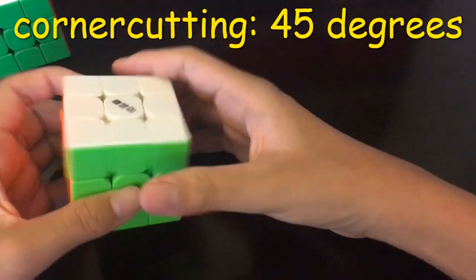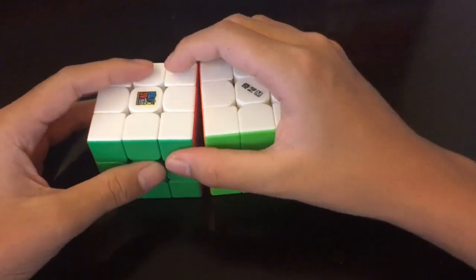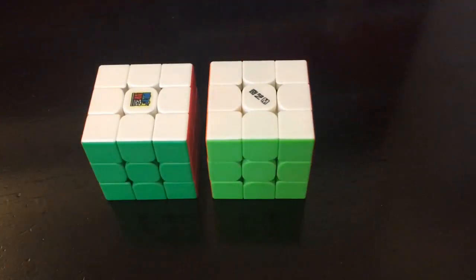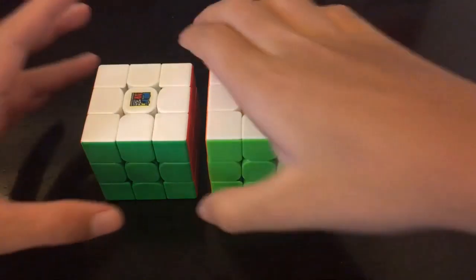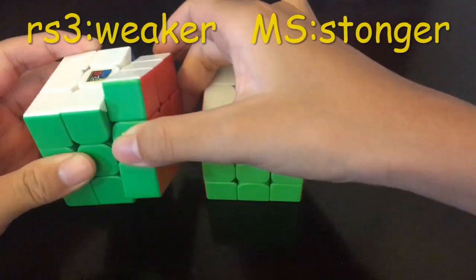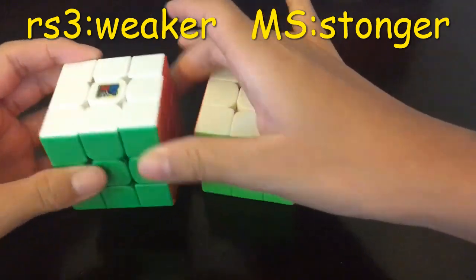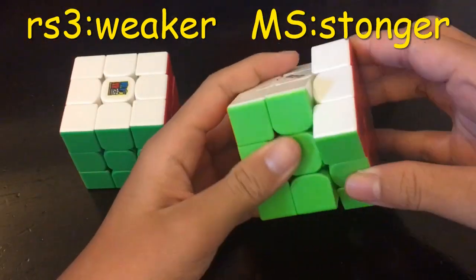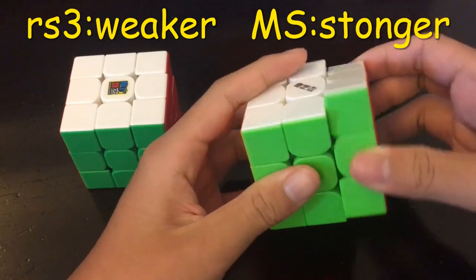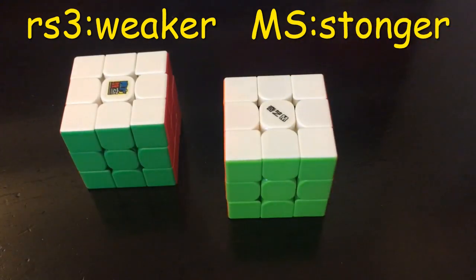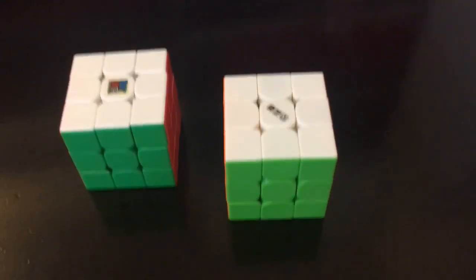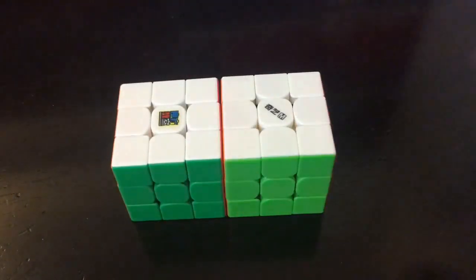Now we'll talk about the magnet strength. The R3M2020 magnet strength is a bit on the medium-weak side, while the GMS is a bit on the strong side. I don't prefer a strong magnet, so the R3M wins here.